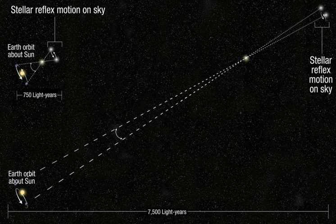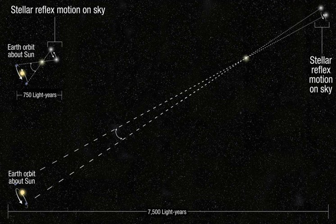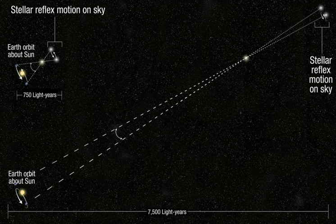A primitive way to determine the distance to the Sun in terms of the distance to the Moon was already proposed by Aristarchus of Samos in his book on the sizes and distances of the Sun and Moon. He noted that the Sun, Moon, and Earth form a right triangle with the right angle at the Moon at the moment of first or last quarter Moon. He then estimated that the Moon-Earth-Sun angle was 87 degrees. Using correct geometry but inaccurate observational data, Aristarchus concluded that the Sun was slightly less than 20 times farther away than the Moon. The true value of this angle is close to 89 degrees 50 minutes, and the Sun is actually about 390 times farther away.